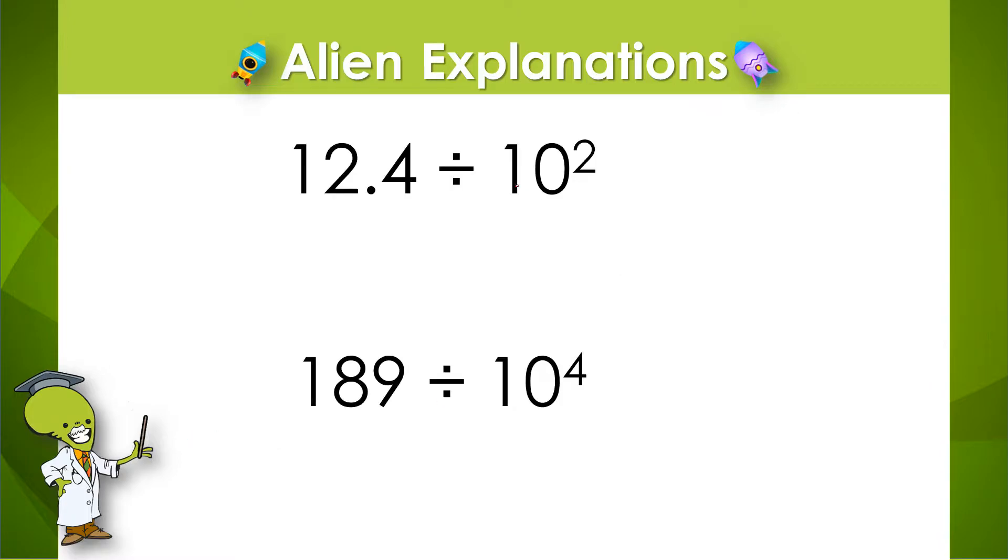Now let's go over how we can work out these problems very quickly. In these examples, 12 and 4 tenths is divided by 10 to the second power. So 12 is being divided by 10 two times. So each digit will move down two place value spots, and an easy way to show that is just by moving the decimal point. So 12 and 4 tenths divided by 10 to the second power equals 124 thousandths.